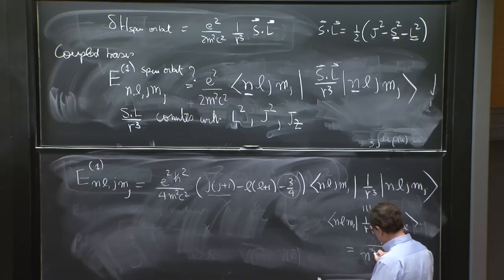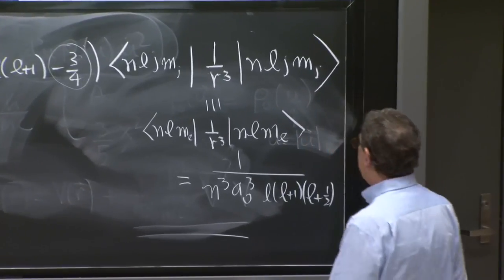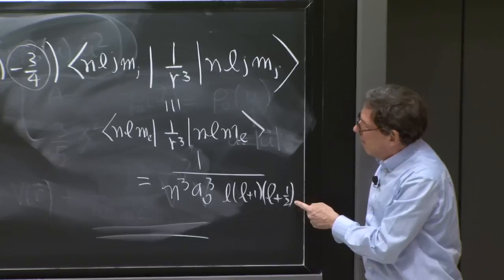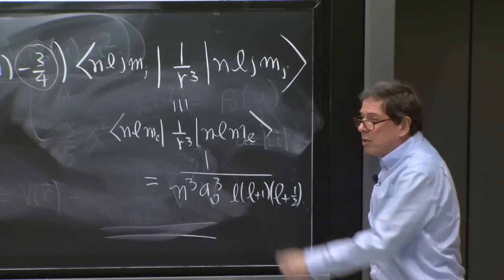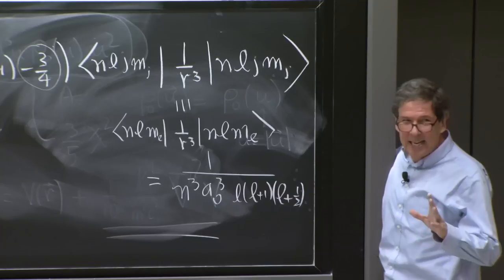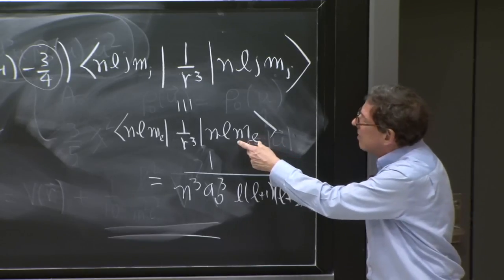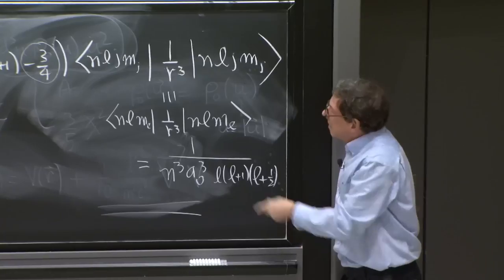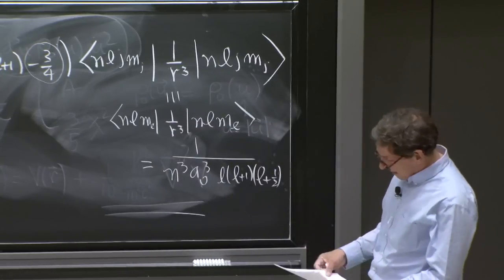Again, it's a little a0 l, l plus 1, l plus 1 half. So this is a known result. It's one of those expectation values that you can get from Feynman Hellman, or from other recursion relations. And this is always computed in the original uncoupled basis. But we seem to need it in the coupled basis. So again, are we in trouble? No. This is actually the same. And it is the same only because this answer doesn't depend on ml. Because these states involve various combinations of ml and ms. But it doesn't depend on ml. So the answer is really the same. So these things are really the same. Happily, that simplifies our work.